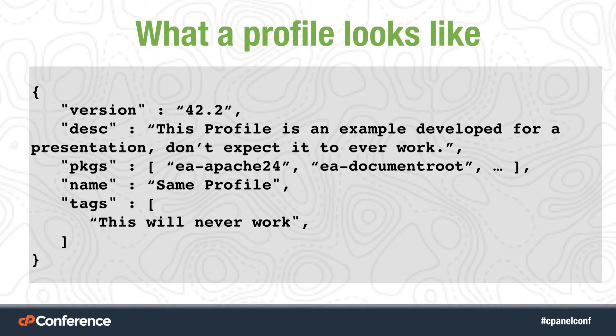Now let's take a look at a profile. This is a JSON file that contains a profile. We have a few keys: first, the version — this is currently benign, but if I don't put a version in a file like this, I'm going to have major issues tracking it down later. Then we have a description, which appears in the UI for Easy Apache 4. Then a list of packages — for example, EA-Apache24 — which specifies to the UI which packages to install. Then the name, which is the title of the profile, and then tags, which are the little green tags that show up in the UI underneath the profile.